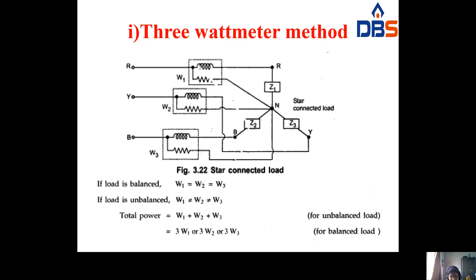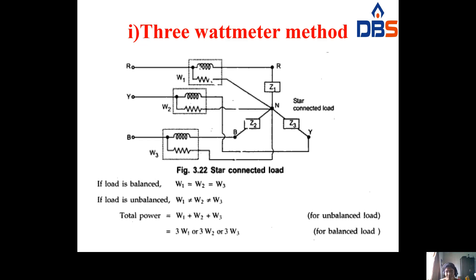If the load is balanced in a star connection, then W1 equals W2 equals W3. Whenever the three loads are balanced, all wattmeter readings are equal, so the power measured by any one wattmeter applies to all three. Whenever the load is unbalanced, W1 ≠ W2 ≠ W3. For unbalanced load, the total power equals W1 + W2 + W3.